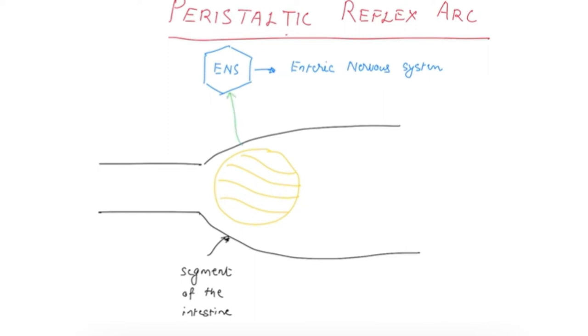Stretch impulses from the bolus of food to the enteric nervous system are carried by the neurotransmitter serotonin. From the enteric nervous system, efferent impulses arise behind the bolus. Acetylcholine and substance P are released, causing constriction behind the bolus.